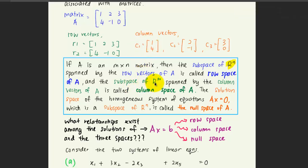That's why we say that the subspace of Rm corresponds to the number of rows here. And the solution space of the homogeneous system of equations Ax equals 0, which is a subspace of Rn, is called the null space of A. So the solutions that you found out for x is actually the null space of A.